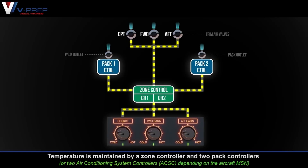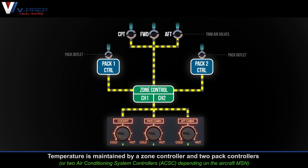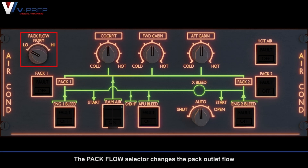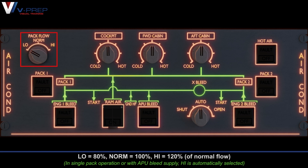Temperature regulation. Temperature is maintained by a zone controller and two pack controllers. The pack flow selector changes the pack outlet flow: low equals 80%, normal equals 100%, and high equals 120% of normal flow.